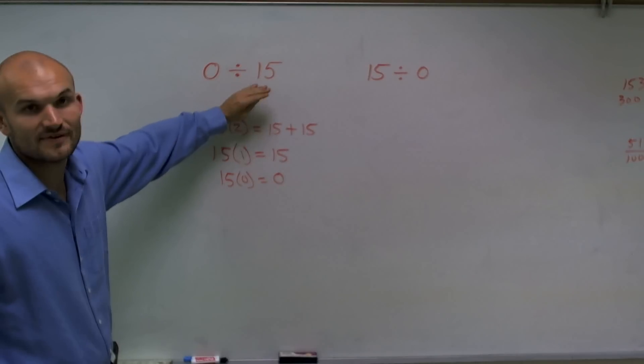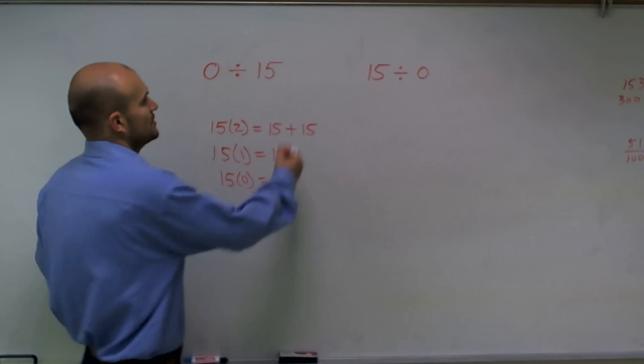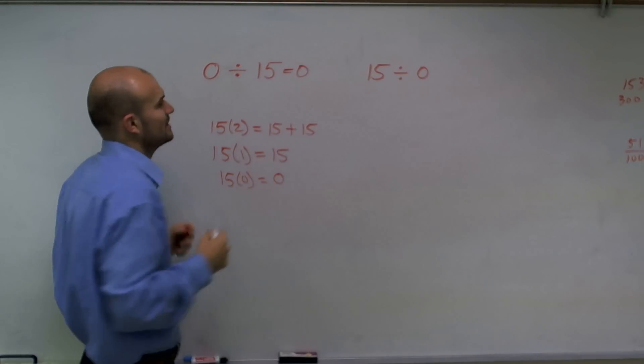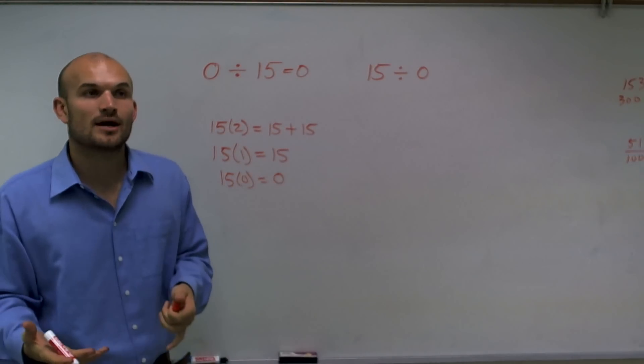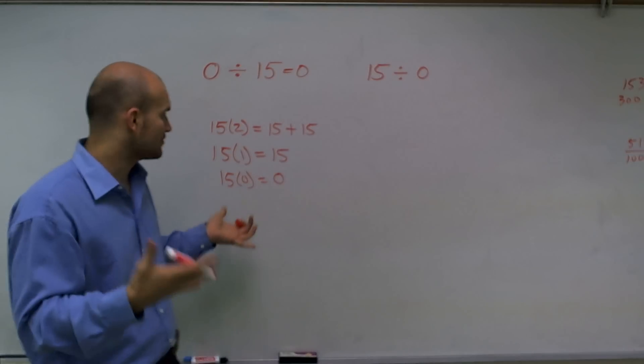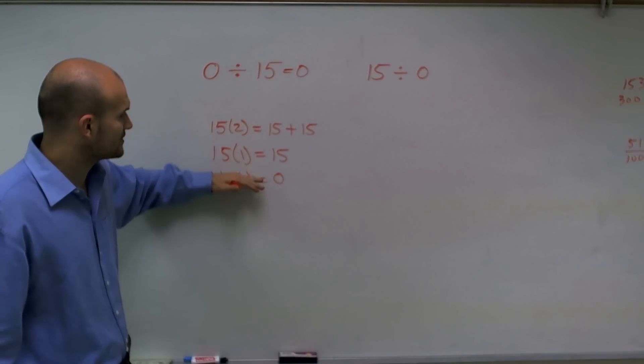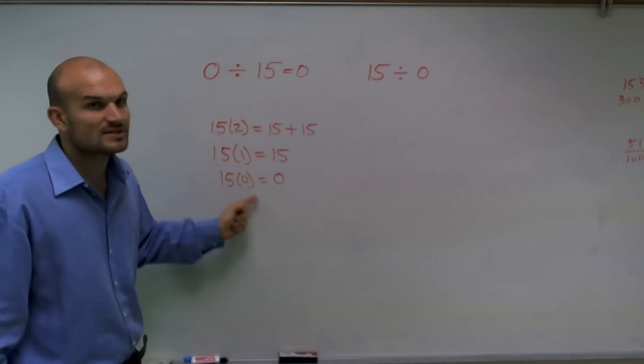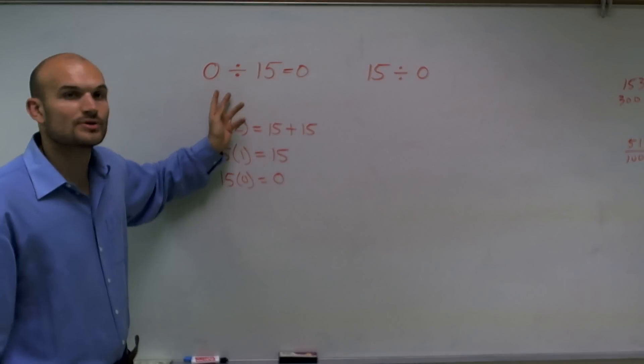So if I have no sets of 15, I automatically have 0. Therefore, this answer is always going to be 0. Any time you take 0 and divide it by a number, you're always going to get 0. The reason is, it doesn't matter, 0 sets of anything will always produce 0.